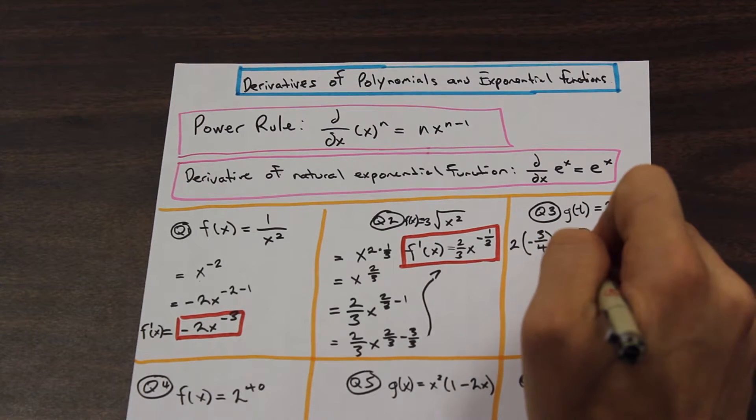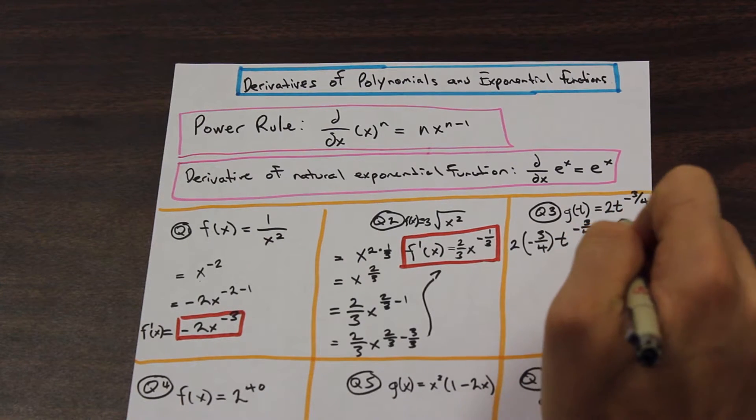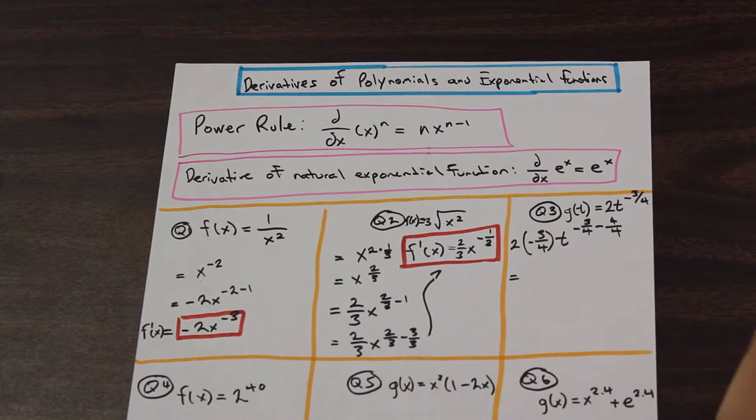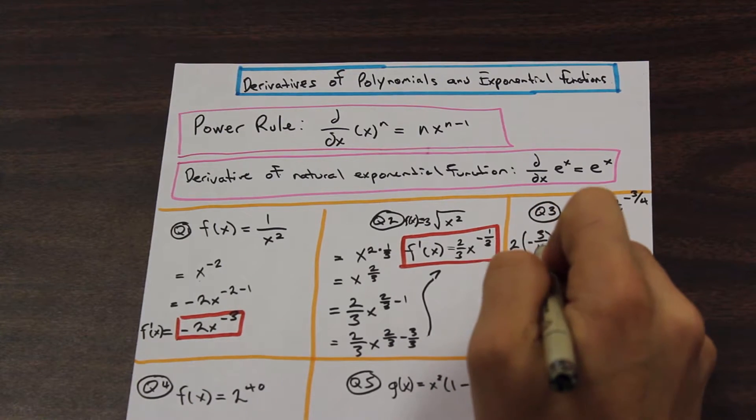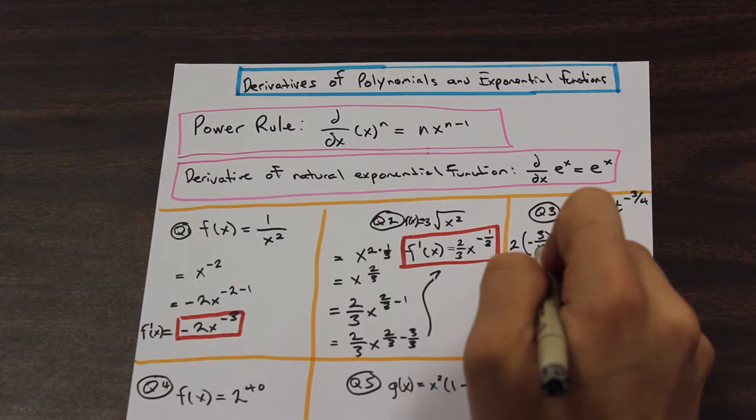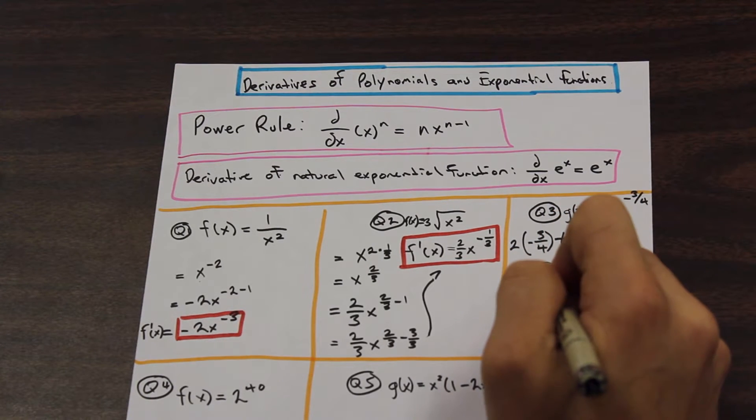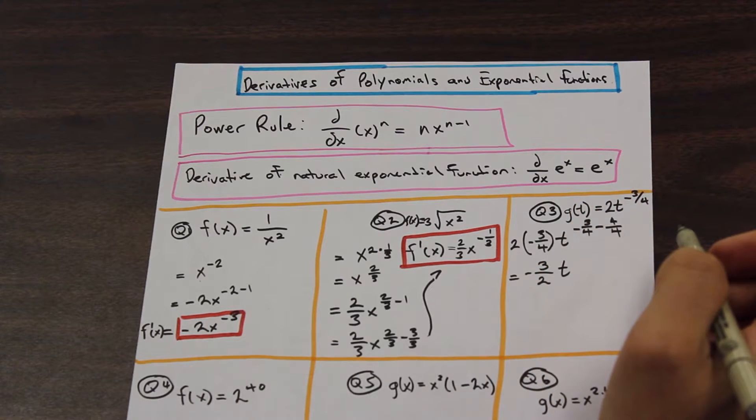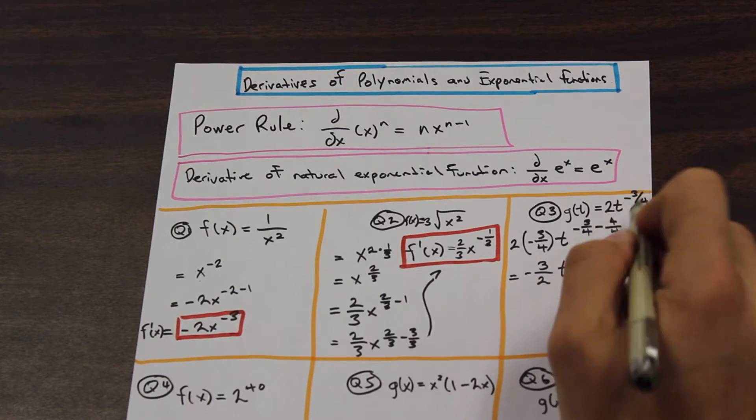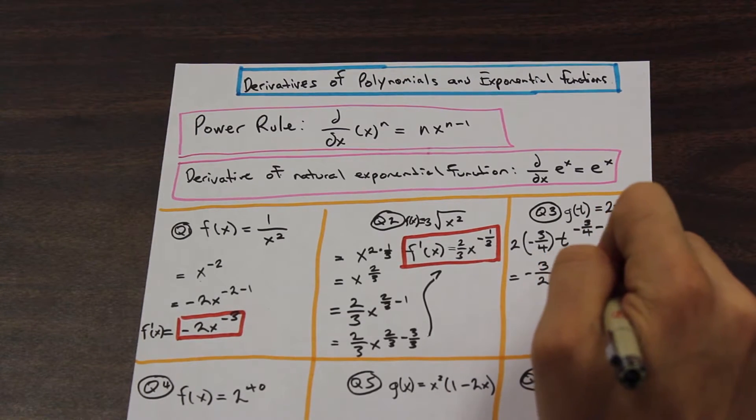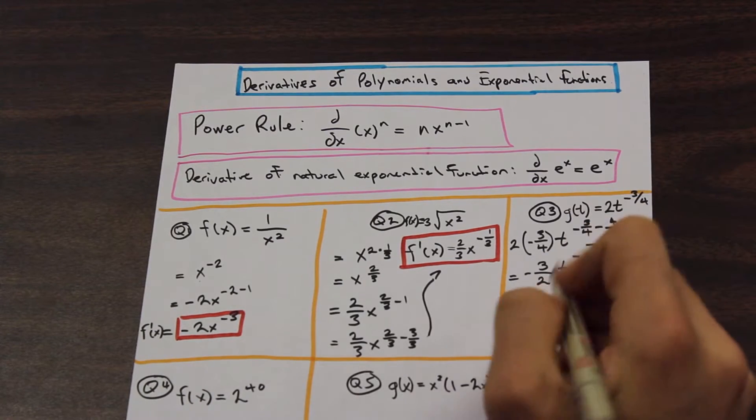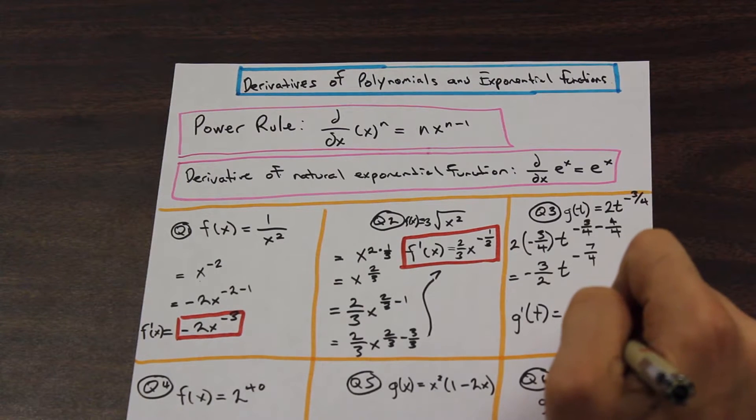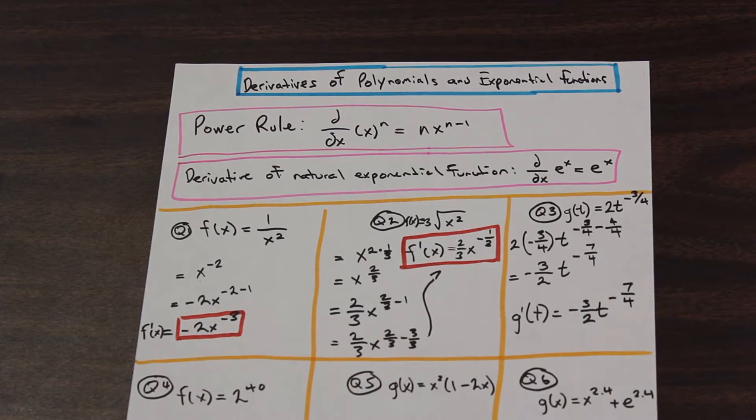to the power of negative 3 over 4 minus 1. So 1 in this case is going to be 4 over 4. And that is equal to, we have 2 times 3 is 6 over 4. And if we divide top and bottom by 2, we're going to be left with 3 over 2 t. And t minus 3 minus 4 is going to give us to the negative 7 over 4. So our g prime t, remember our notation, is negative 3 over 2 t to the power of negative 7 over 4.